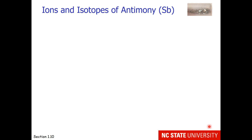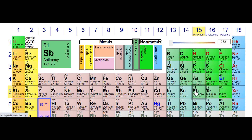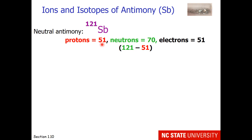Let's look at a couple of examples. I've chosen antimony because it is a metalloid and can form both a cation and an anion. Here are some different ions and isotopes of antimony, which has chemical symbol Sb. Starting with neutral antimony: it has an atomic mass of 121, and if we go to the periodic table, we see that it has 51 protons. To find the number of neutrons, we take the atomic mass of 121 and subtract the atomic number of 51 — this particular antimony has 70 neutrons. The charge is neutral, so the number of protons equals the number of electrons.